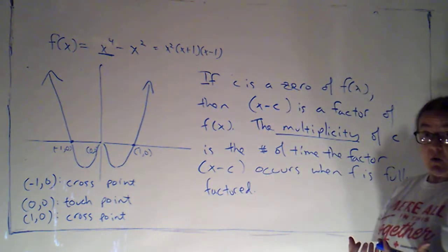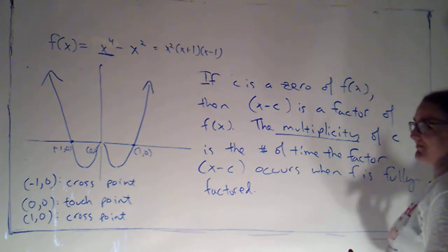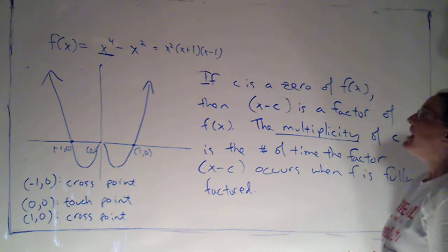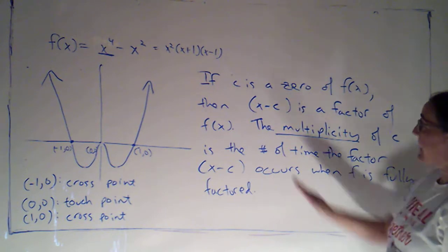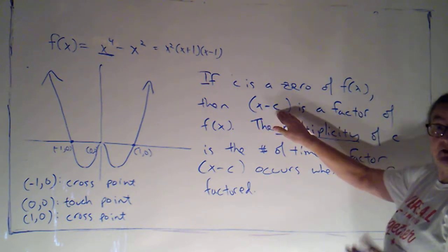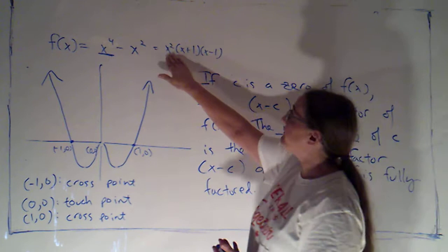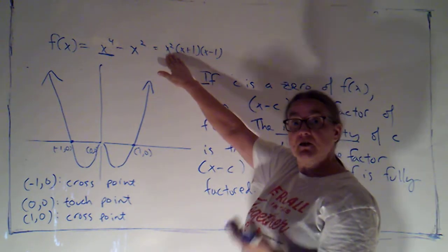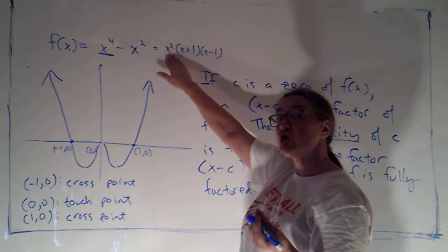So, zero was a zero. If I plugged in zero, it made this zero. The factor corresponding to that would have been x minus 0, or just x. That factor occurred twice. So, we would say that zero had a multiplicity of 2.